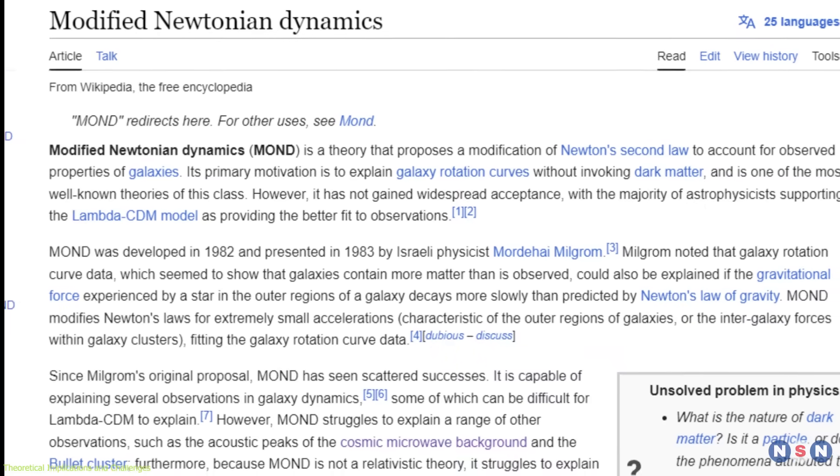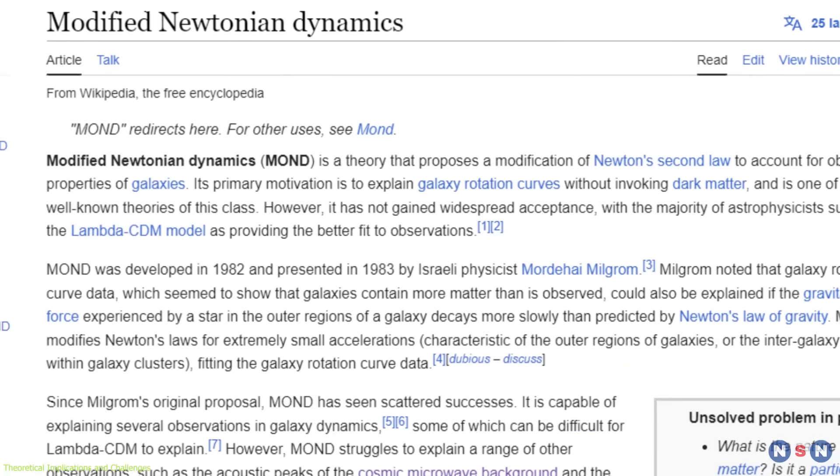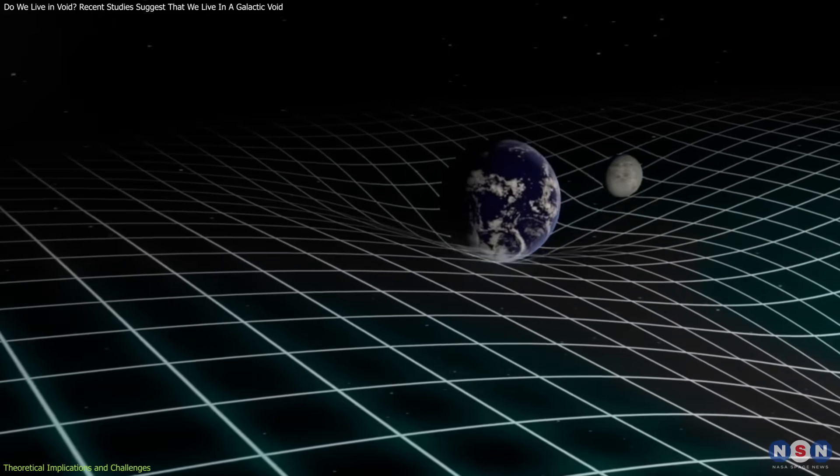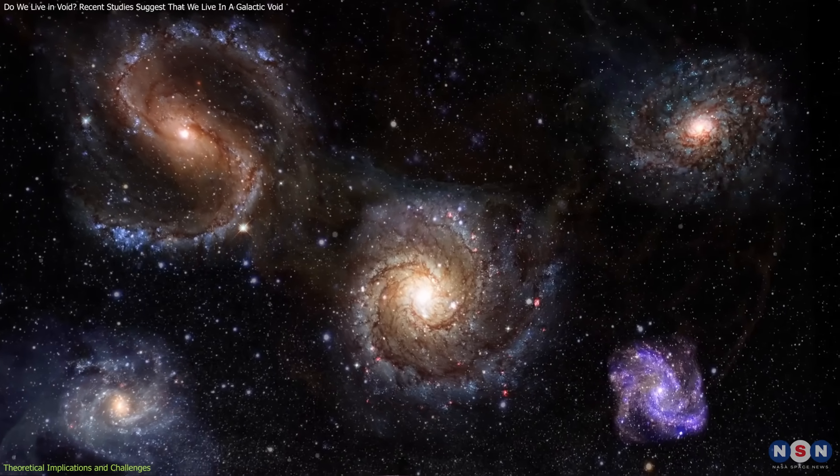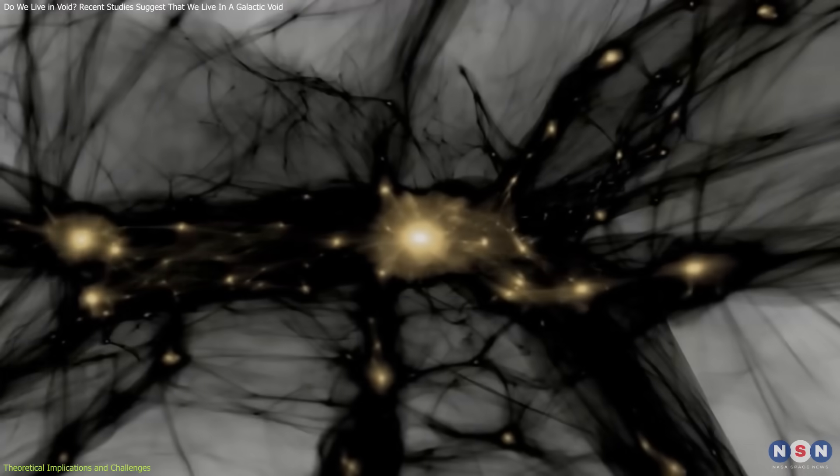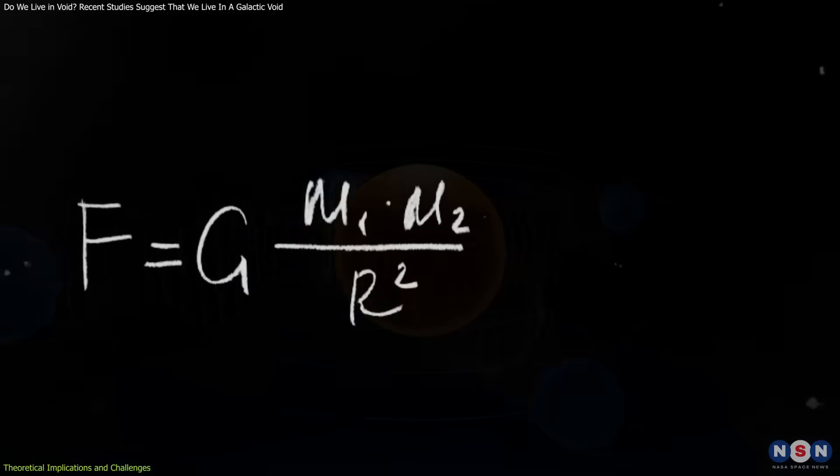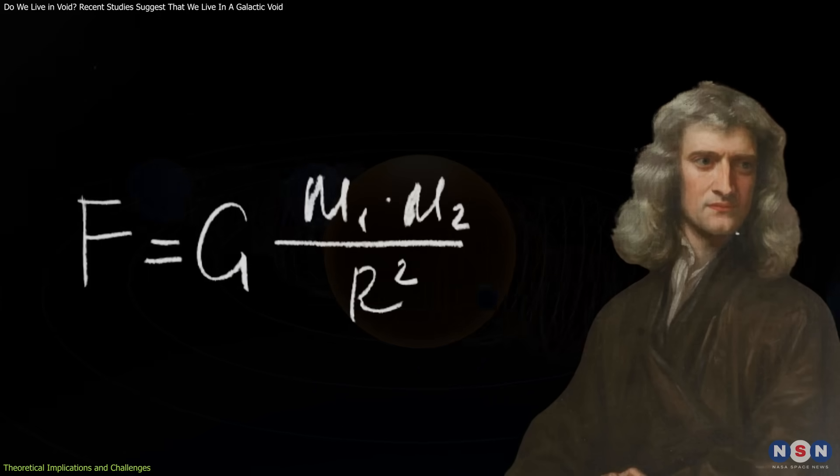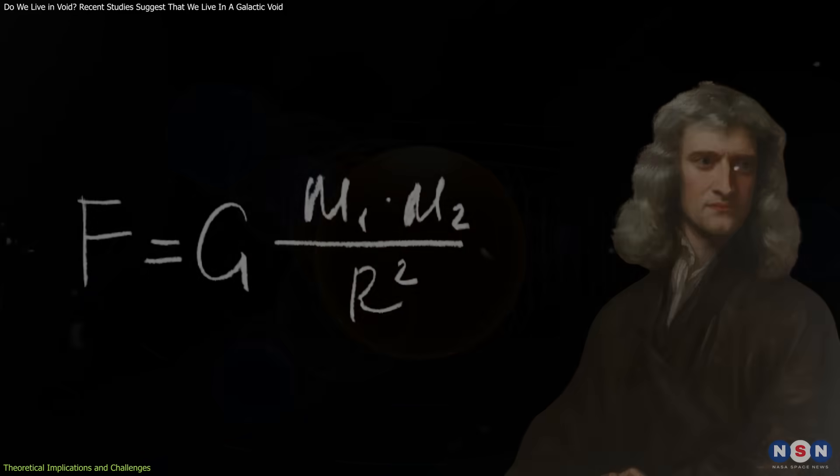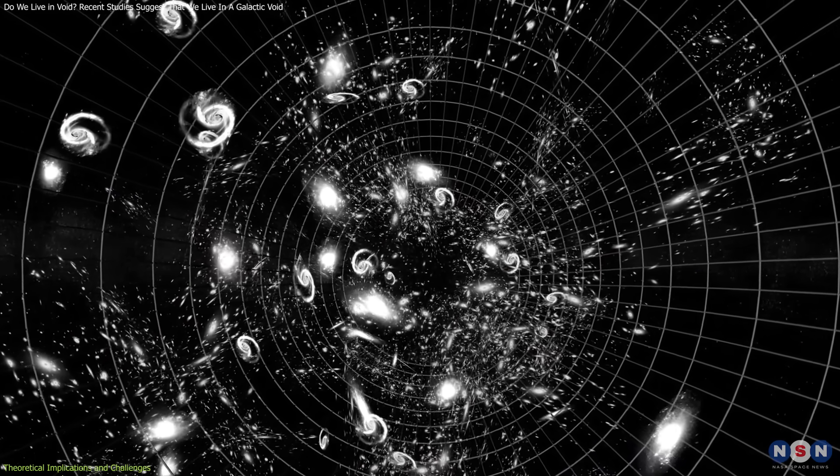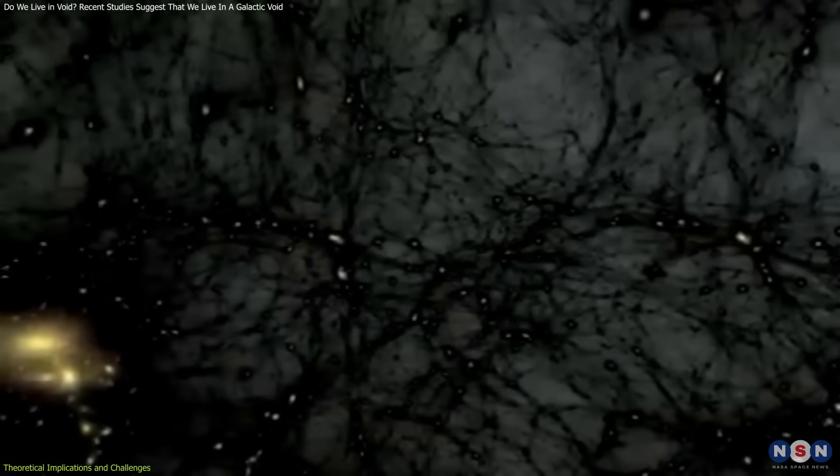Furthermore, the introduction of modified Newtonian dynamics as an alternative theory suggests that traditional understanding of gravity may not hold at the cosmic scales influenced by such voids. Bannock proposes that the anomalies in galaxy rotation speeds, of course, traditionally attributed to dark matter, might instead be explained by modifications to Newton's law of gravity at extremely low gravitational fields, like those in a cosmic void. This shift in perspective could mean that structures such as galaxy clusters, and even the behavior of dark matter and energy, need to be reconsidered.